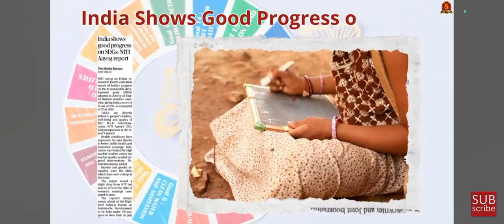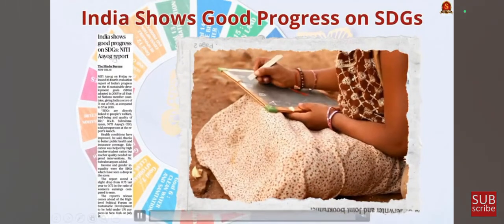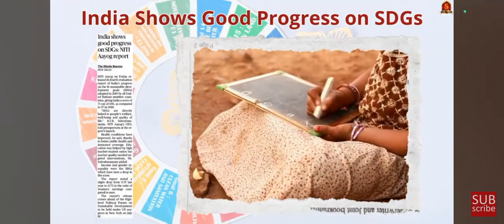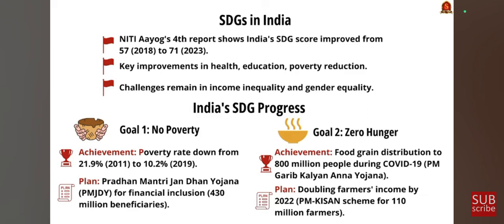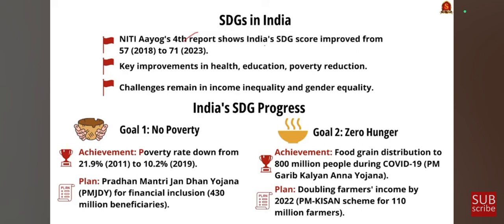This article is about India's progress in the SDG report recently released by Niti Aayog. This is actually the fourth report of Niti Aayog, and India has shown considerable improvement from its previous report. Key improvements have been shown in health, education, and poverty reduction, but challenges remain in income inequality and gender equality. Goal 1 — no poverty: poverty has been steadily declining from 21.9% in 2011 to 10.2% in 2019. Several schemes like Pradhan Mantri Jan Dhan Yojana for financial inclusion have been beneficial.